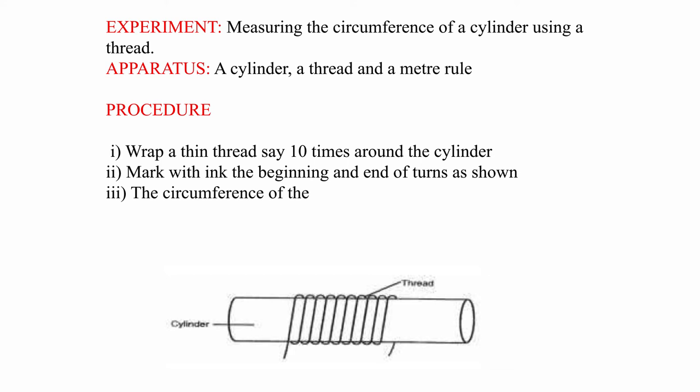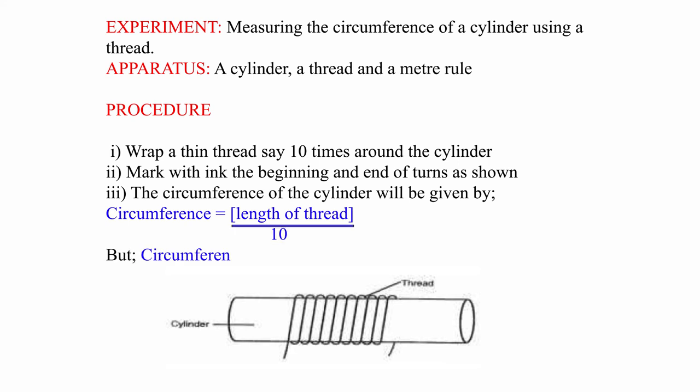3. The circumference of the cylinder will be given by: Circumference equals length of thread divided by 10. But circumference equals pi d or 2 pi r, where r is the radius of the cylinder.